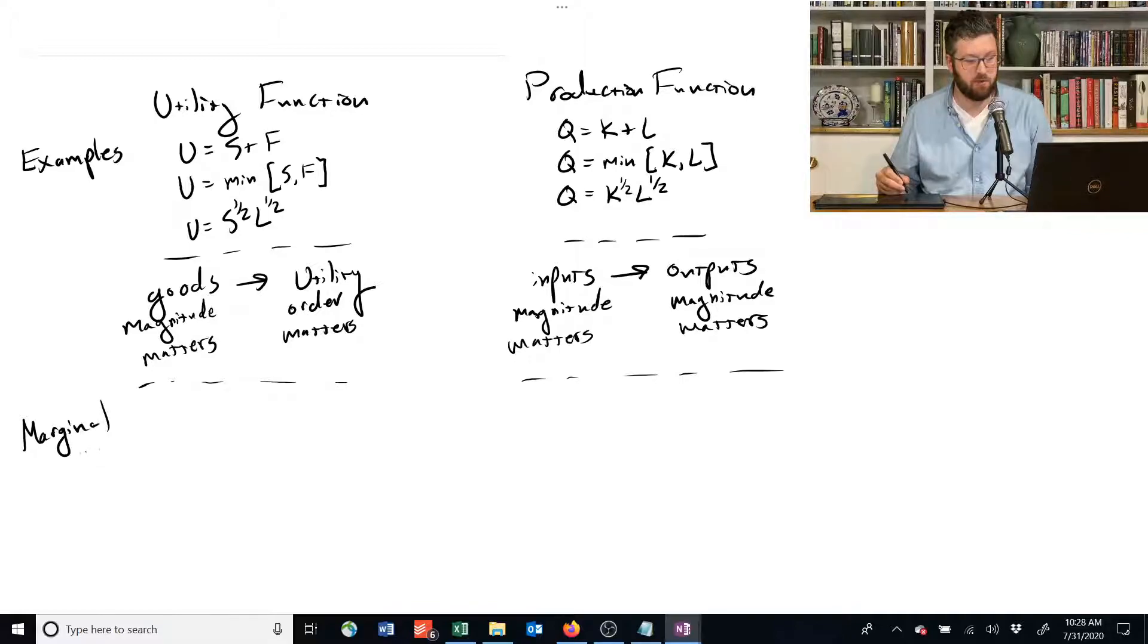Another parallel is marginal products. Well, it's not called a product for utility. Marginal utility is when you take the derivative of the utility function with respect to its inputs, or with respect to its arguments, which are goods in this case. So it's the derivative of the utility function with respect to S or F.